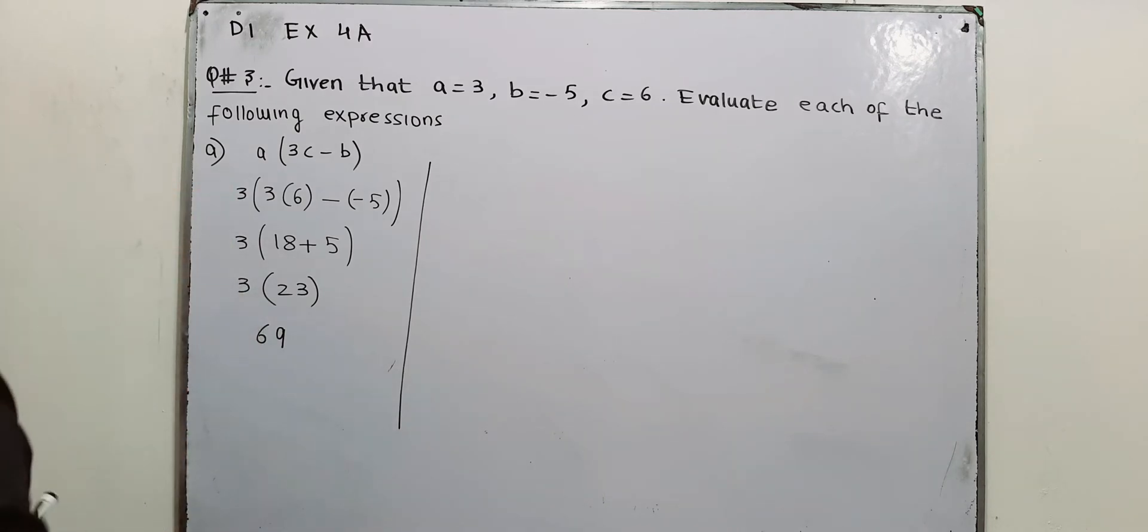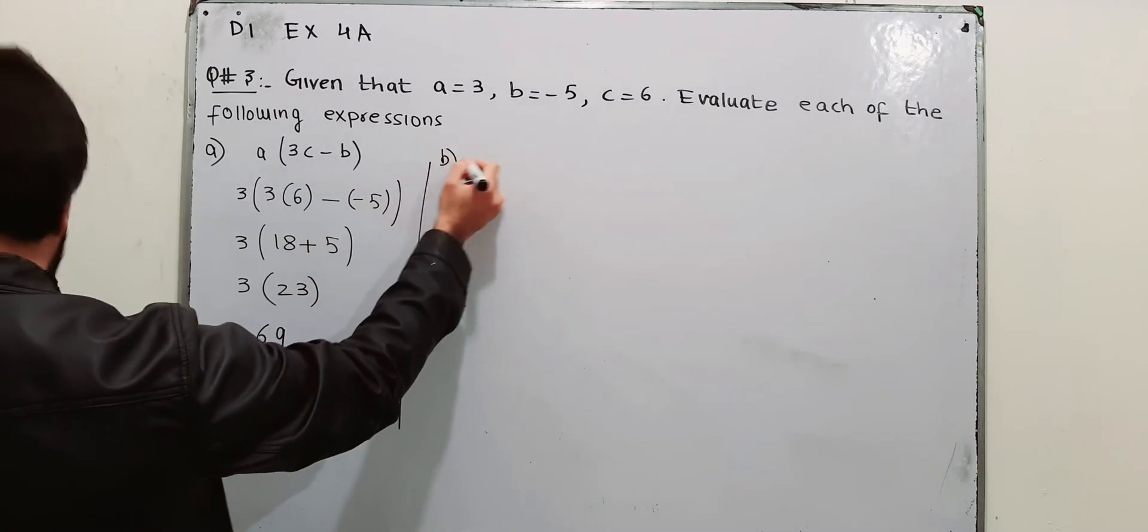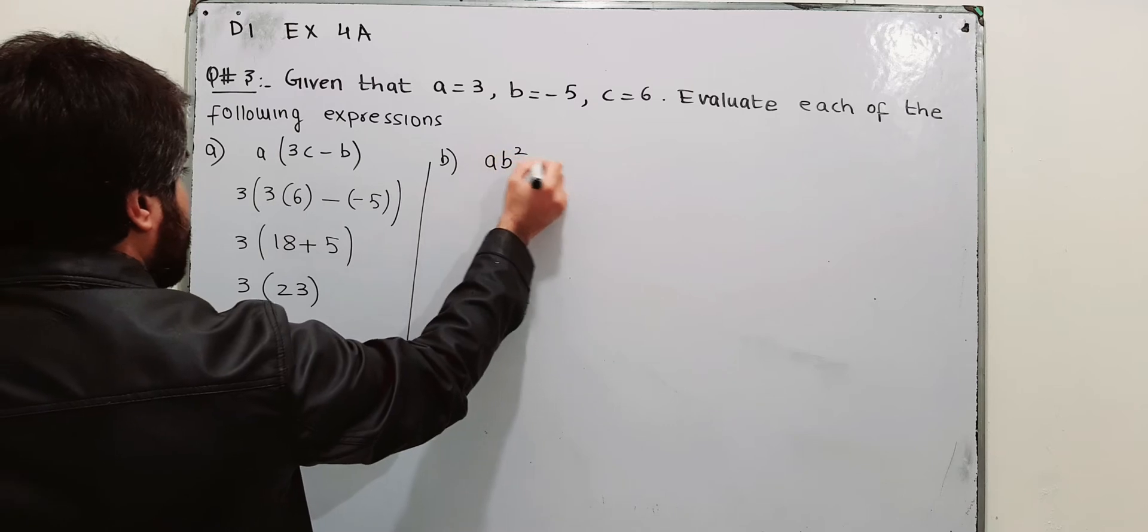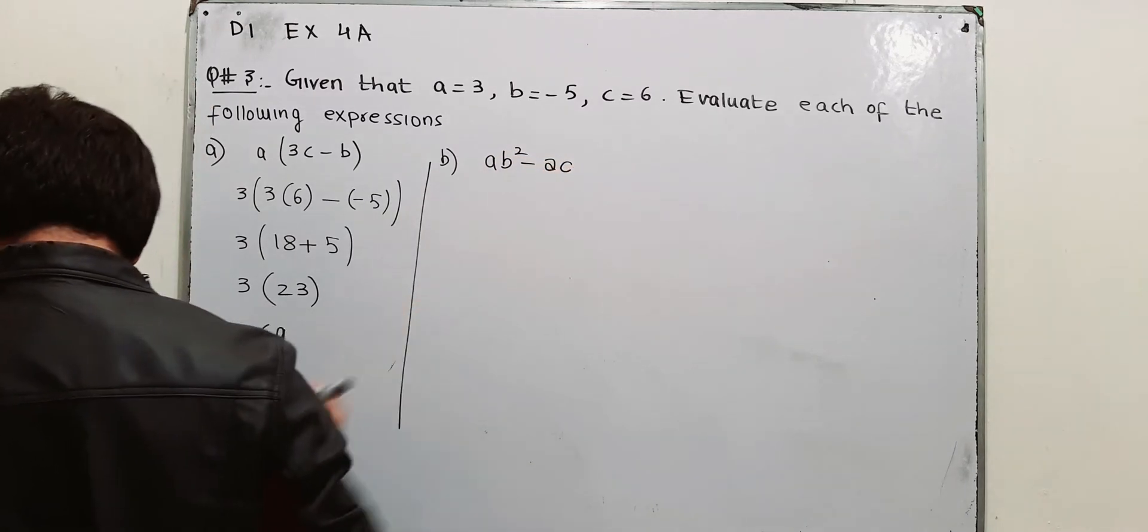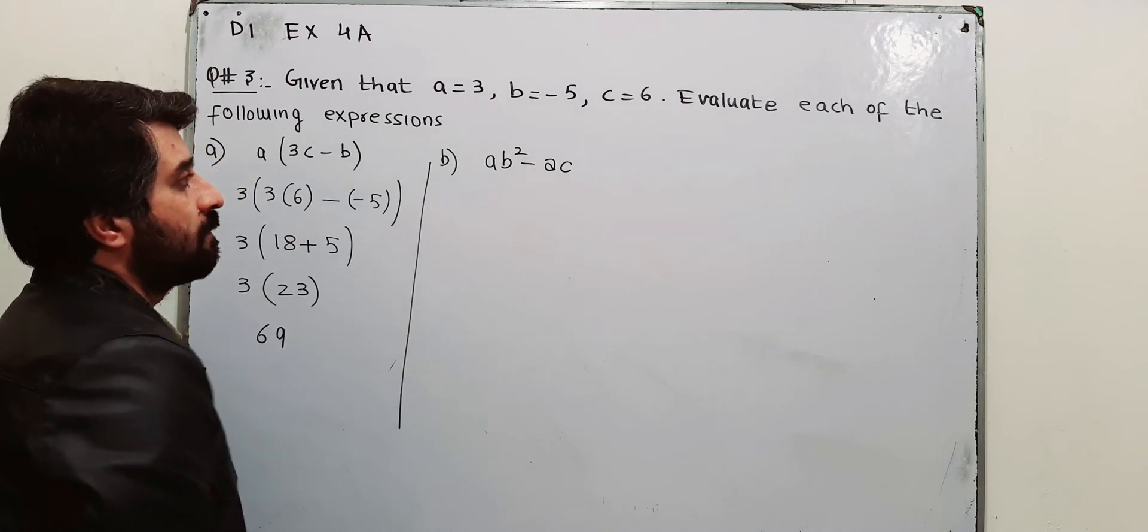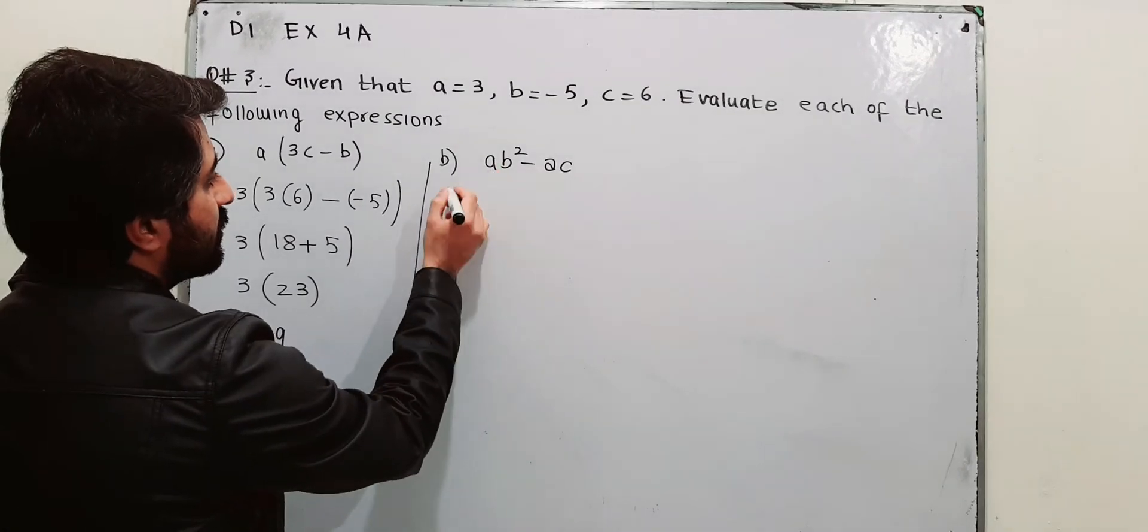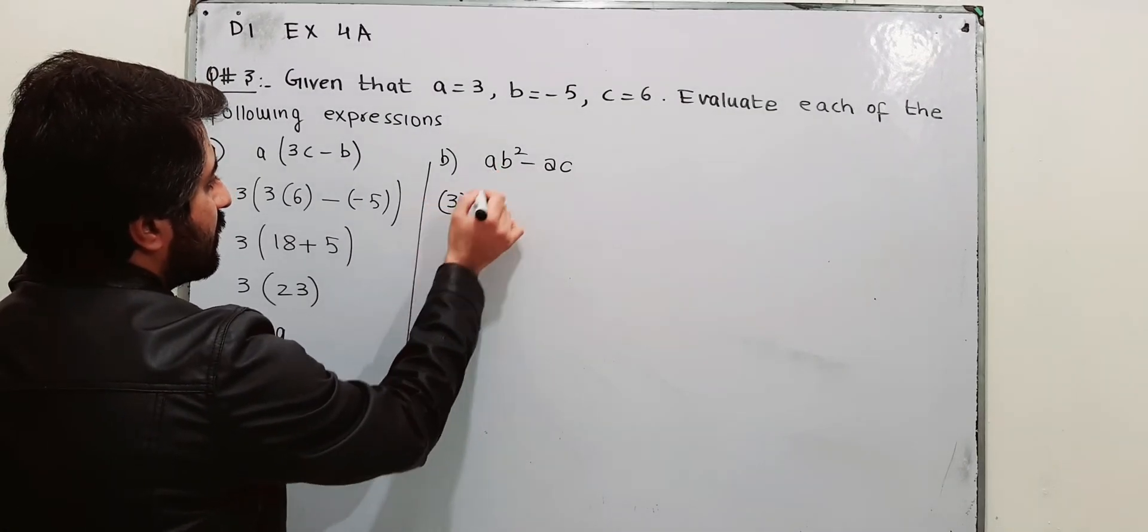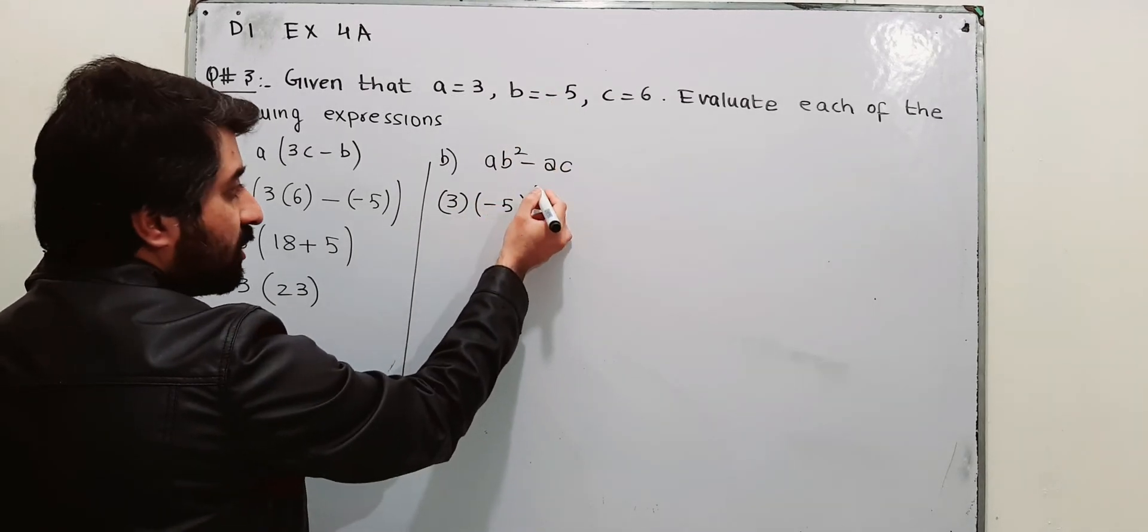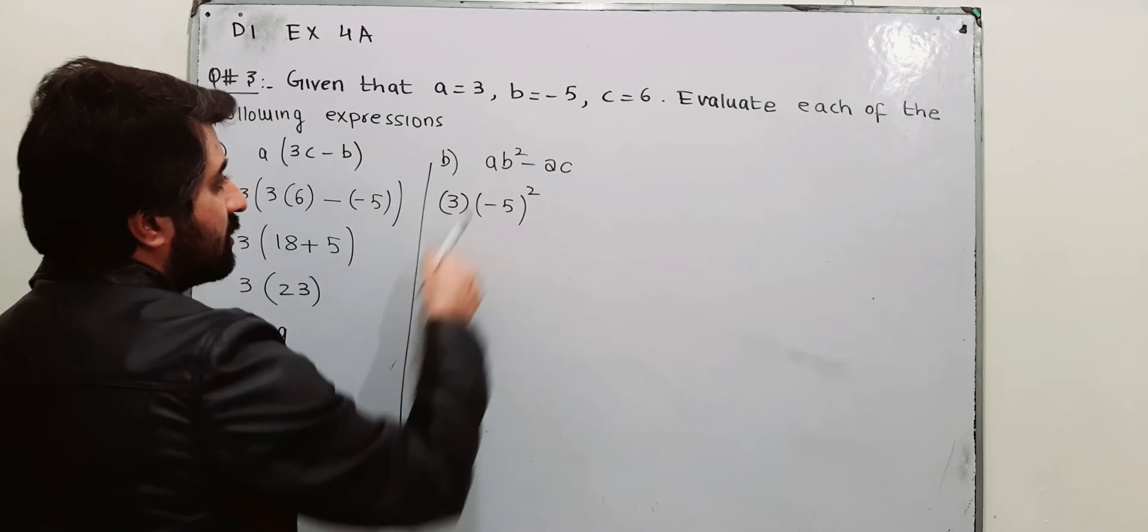Part number B is evaluate AB² - AC. You simply need to put the values of A, B and C in this expression. In place of A, use 3. For B, use minus 5 and you have to take square. This is B square.